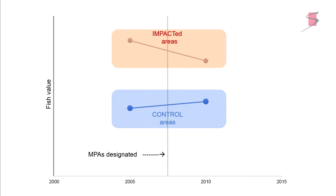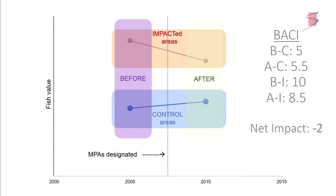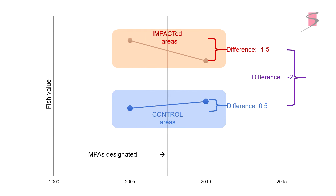This is where speaking the same language really matters. We have a time trend, fish value, some control areas we think should be unaffected, and some impacted areas. We layer on before and after — what Hunter wanted to see were four dots: before-control, after-control, and we see the control goes up by 0.5 while the impact goes down by 1.5, so the net is negative 2. What I wanted was the specification. But again, these are just two ways of talking — different languages trying to get to the same thing.